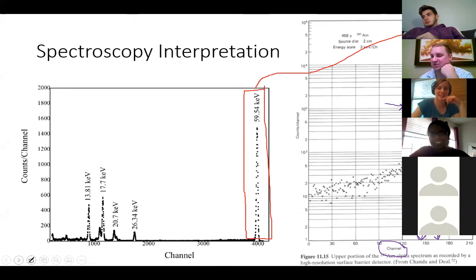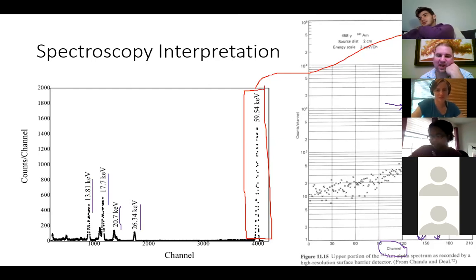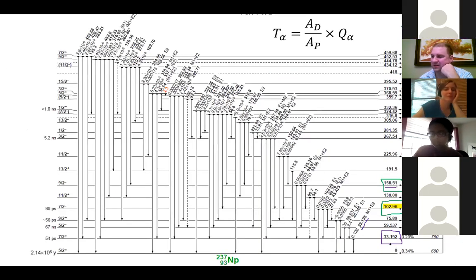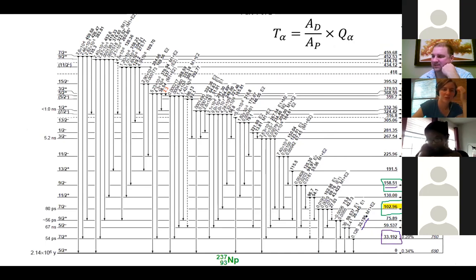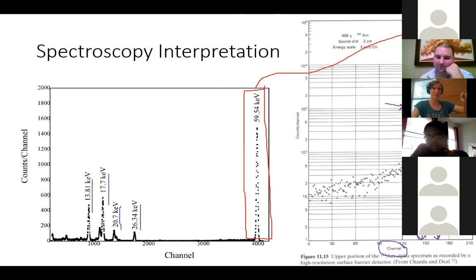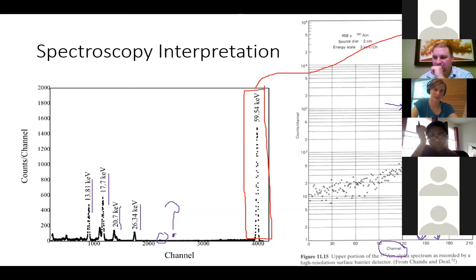Looking at the spectrum, we see peaks at 26, 20, 17.7, and 13.8 keV — all lower energy than the 59.5 keV peak. Between 59.5 keV and the ground state there is really only the 33.192 keV level, and we don't see gamma rays of that energy. A student suggests these could be Compton scattering features rather than direct transitions, which the instructor confirms warrants a quick calculation.